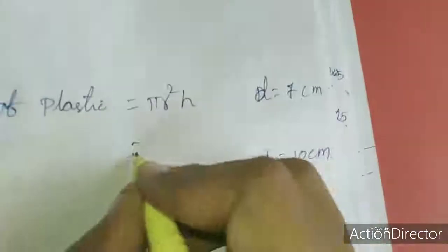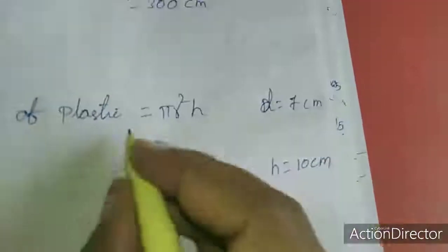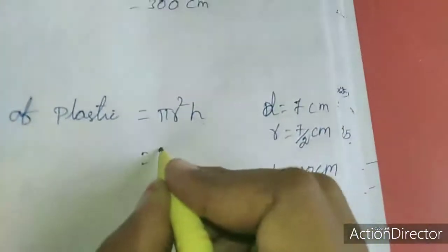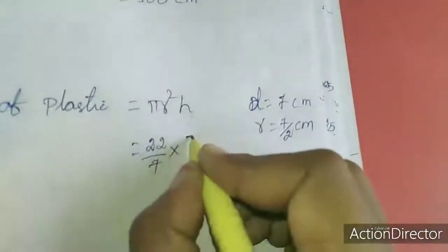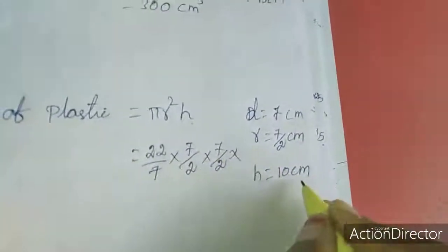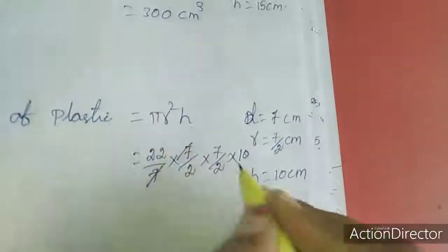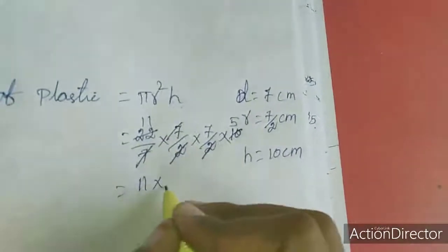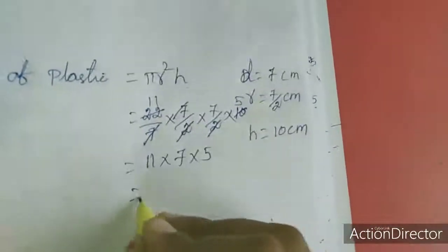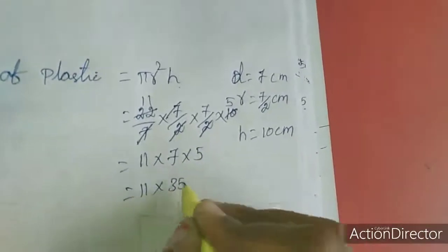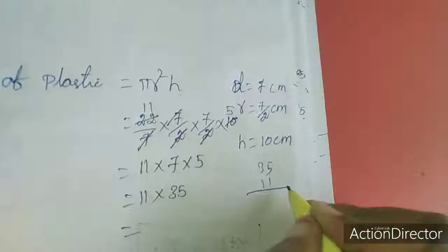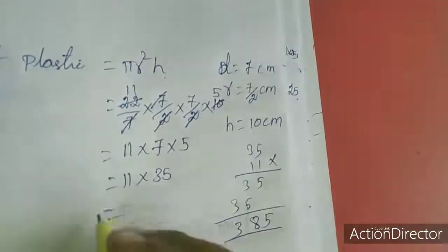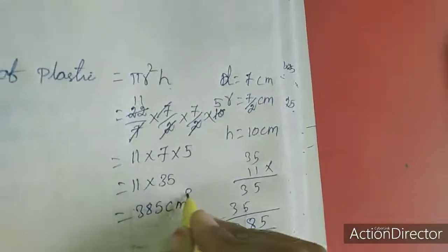Volume of plastic cylinder: pi r squared h. They gave diameter d equals 7, so r equals 7 by 2 centimeters. Pi times 7 by 2 squared times 10. After canceling, 11 times 7 times 5, which is 35 times 11, equals 385 cubic centimeters.